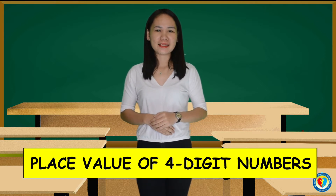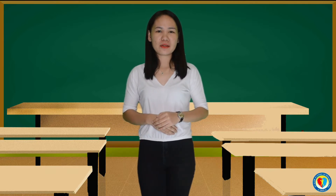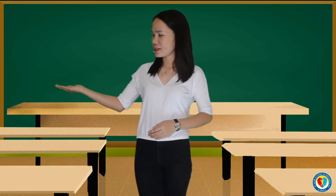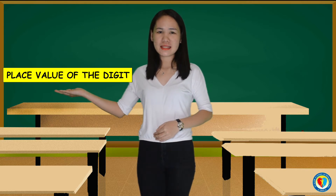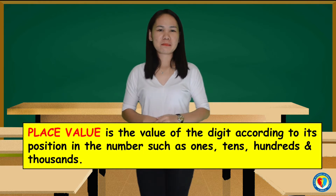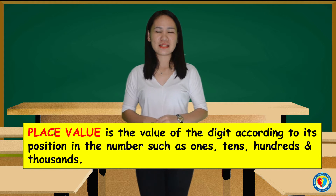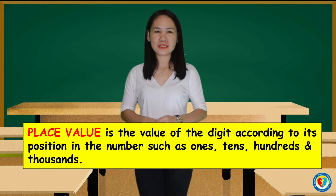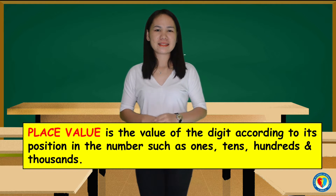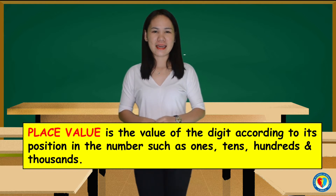Before that, what do you mean by place value of the digit? Place value is the value of the digit according to its position in the number, such as ones, tens, hundreds, and thousands.